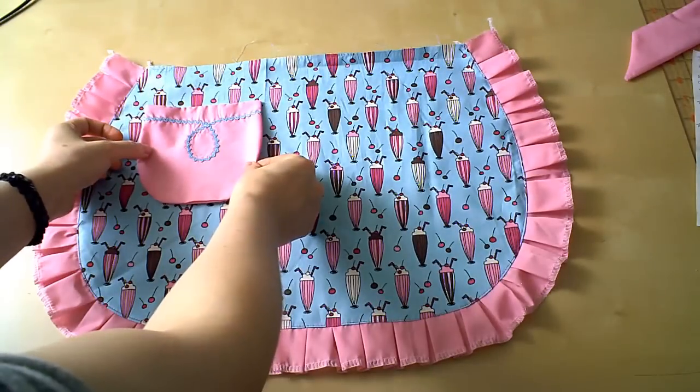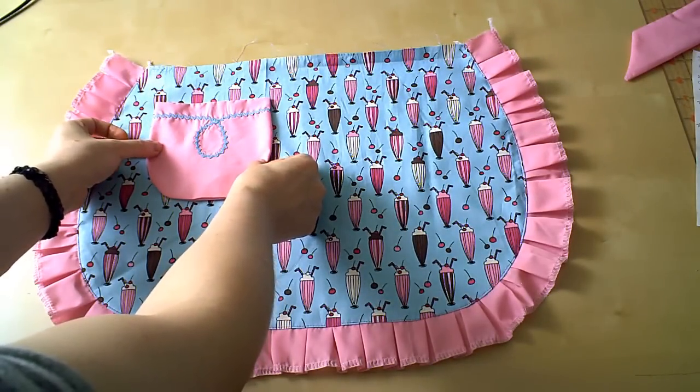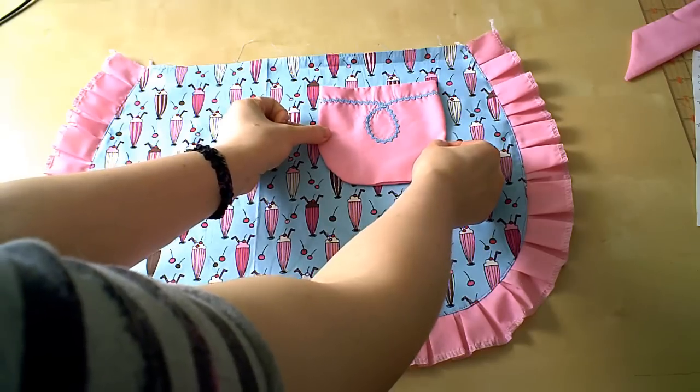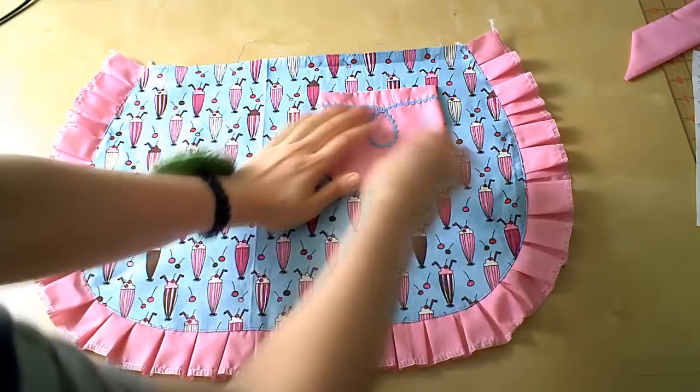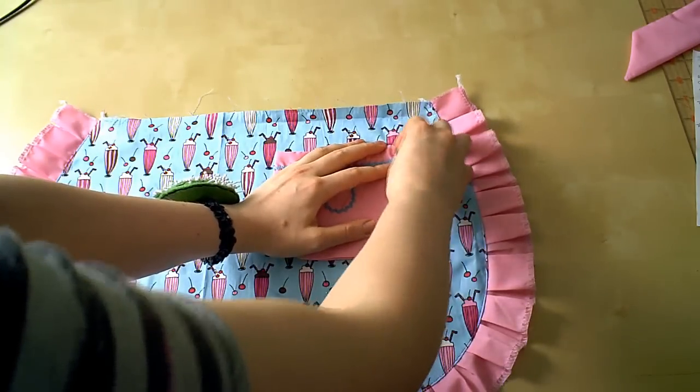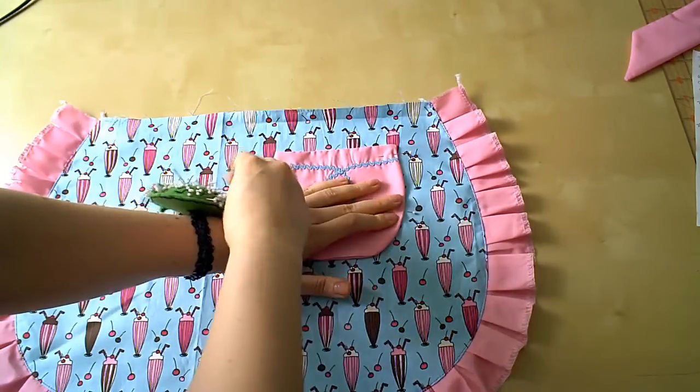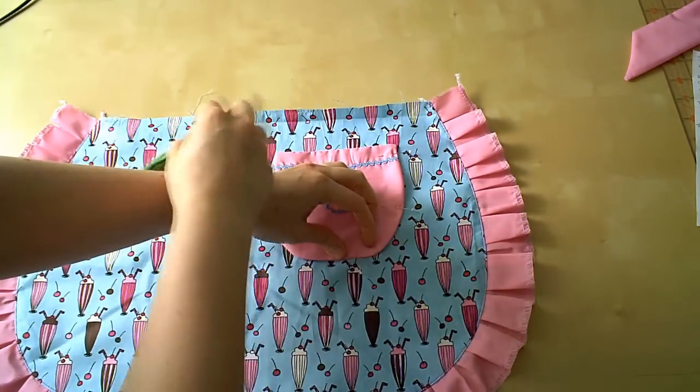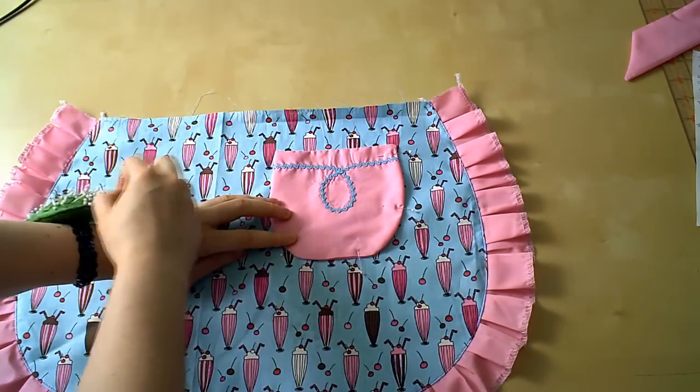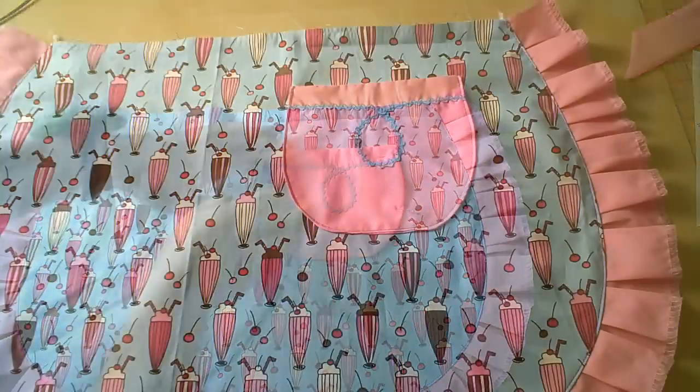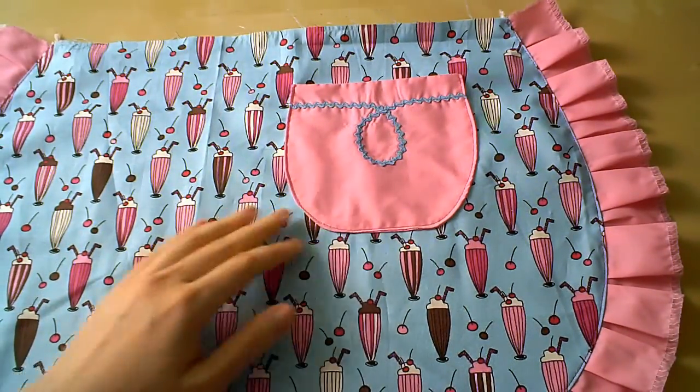Next we'll attach the optional pocket. Figure out where you'd like the pocket to go, and then pin in place. This would also be a good time to add any other details you might want, rick rack, appliqués, et cetera, et cetera. To attach the pocket to the apron, it's the same way I'd topstitch. I sew about 1/8 of an inch from the edge, maybe less.